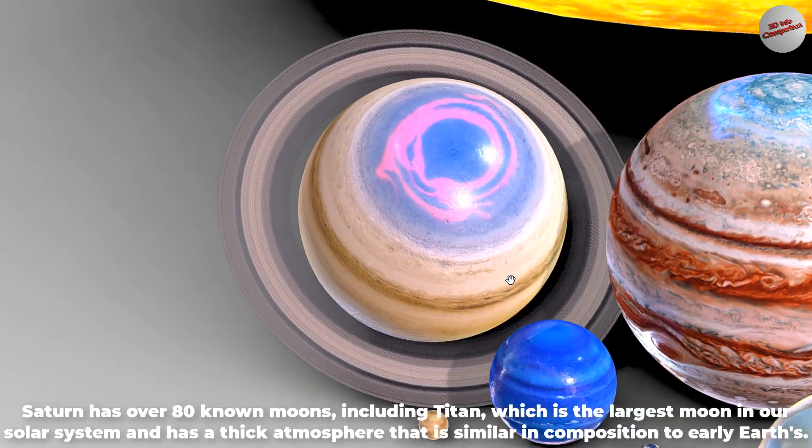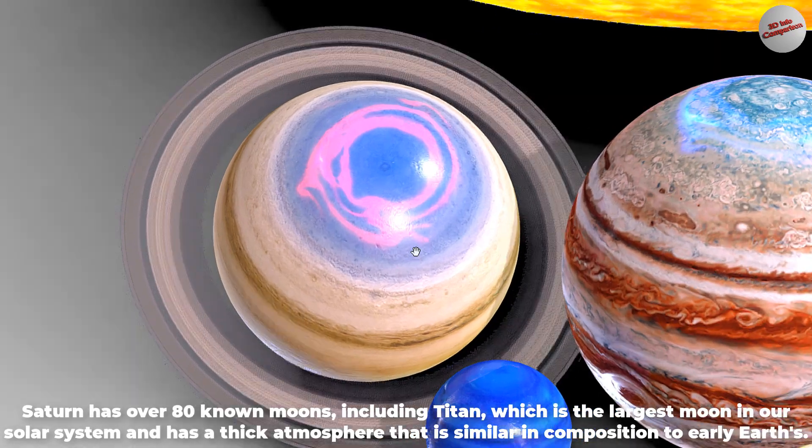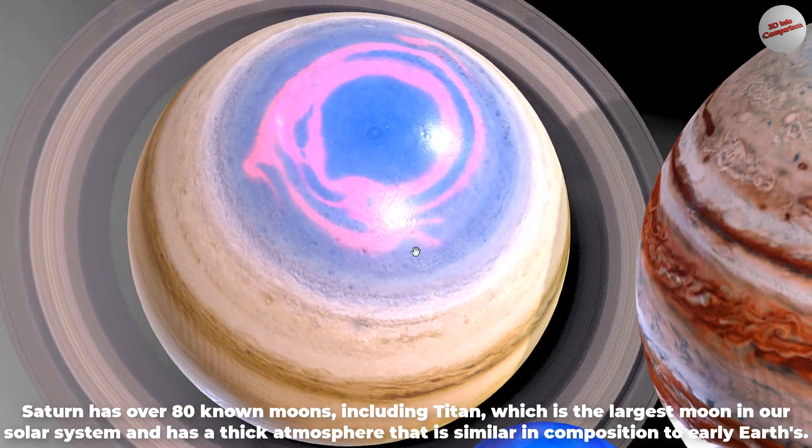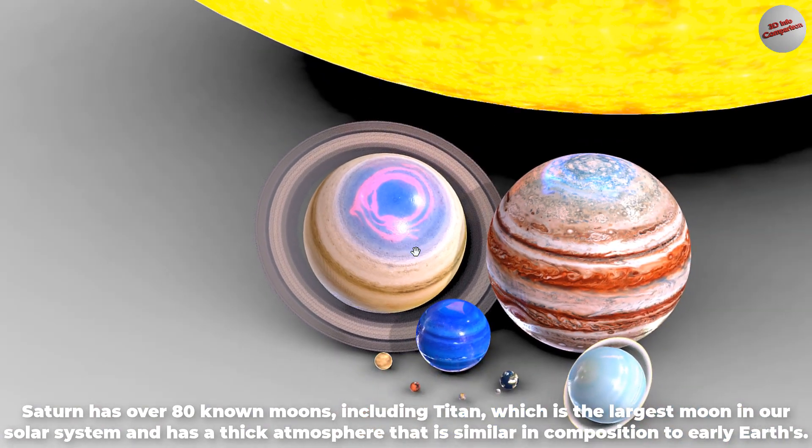Saturn has over 80 known moons, including Titan, which is the largest moon in our solar system, and has a thick atmosphere that is similar in composition to early Earth's.